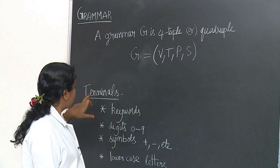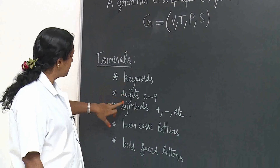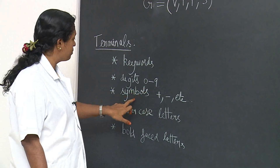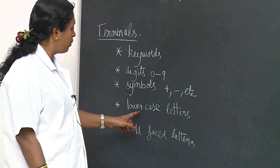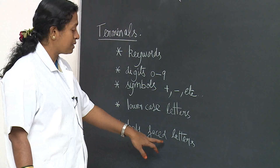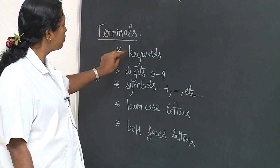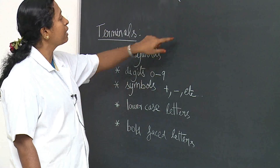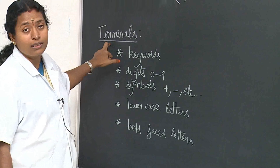What are the terminals? The terminals include keywords, digits from 0 to 9, symbols such as plus and minus, lowercase letters and uppercase letters. If you see all these things in a grammar, those are known as terminals.